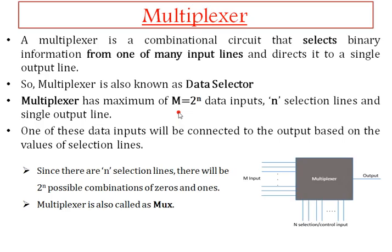In general, a multiplexer is nothing but a circuit or device which is used to select one input from many number of inputs. It is going to select one input from many number of inputs — multi means many. So among them we are going to select only one. It is also known as a data selector.